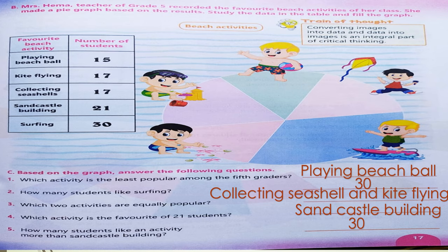How many students like an activity more than sand castle building? Sand castle building has 21 students, and more than this is 30. That activity is surfing. They asked how many students, so you will tell the number of students — that is 30.